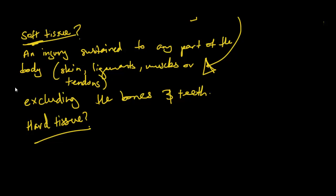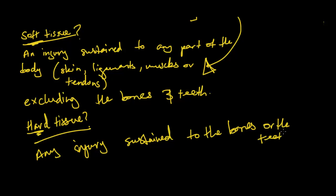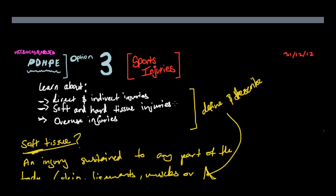Okay, so hard tissue injury and soft tissue injuries. Now, as I said, the name actually just gives it away so easily. Hard tissue. So hard tissue, and over here it says excluding the bones and teeth. So obviously a heart tissue injury is any injury sustained to the bones or the teeth. It's as simple as that. That's all you need to know. So we've already covered these two things here, soft and heart tissue injuries. We've already covered it, and we can just move on to the next part, which is direct and indirect injuries.